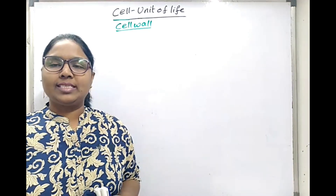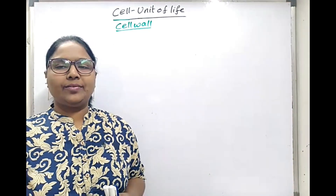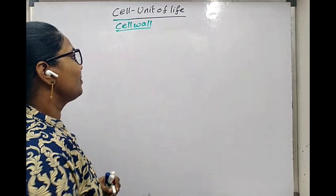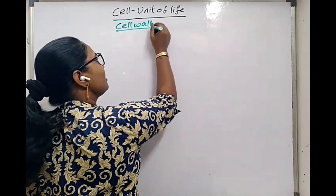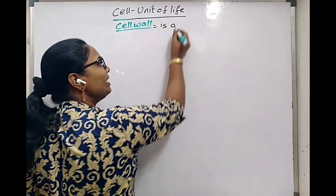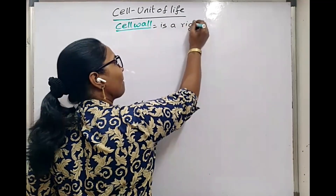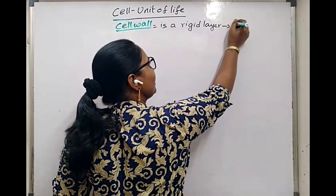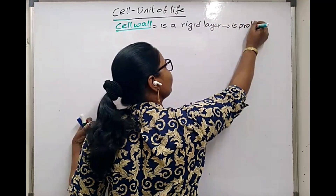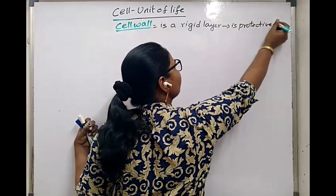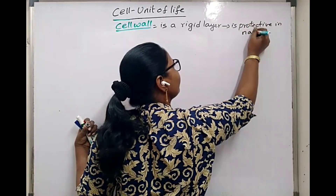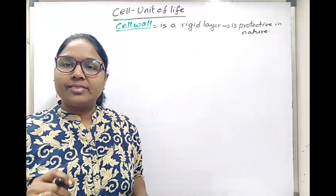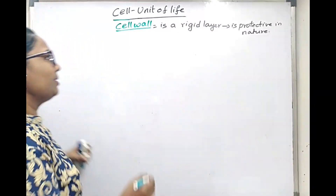Hello students. Now we will learn about cell wall, different types of cell walls, and different structures of different cell walls. Cell wall is a rigid layer. Cell wall is protective in nature, and it gives strength to that particular cell.